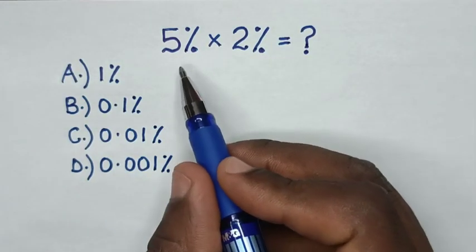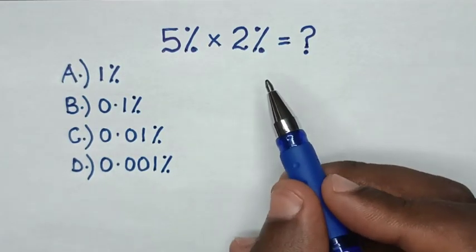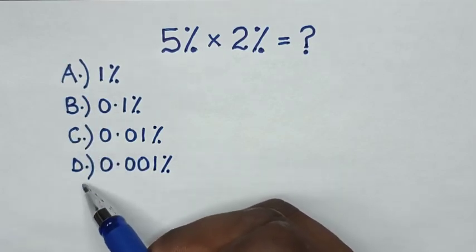Hello, how to solve 5% multiplied by 2% by selecting between the answers in A, B, C, or D.